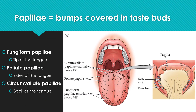Now let's move on to taste. Our tongue is covered in hundreds of bumps known as papillae. There are four types of papillae, but only three of them include taste buds. So we're going to concentrate on these three for now.